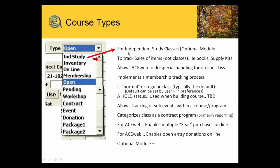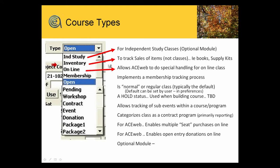Independent study — this is for the independent study optional module. Inventory — it gives you the ability to create a class that you're just using to keep track of sales of particular items. Online — if you've got ACE Web, this is relevant to being able to let you group your courses for online, because typically if they're an ongoing class you don't have a beginning or end date, and that allows ACE Web to do special handling. Membership — you have to create a membership class if you're doing membership tracking, because this initiates the membership tracking process for your OLLI programs or special member types. Open is generally probably the default class type for most of you.